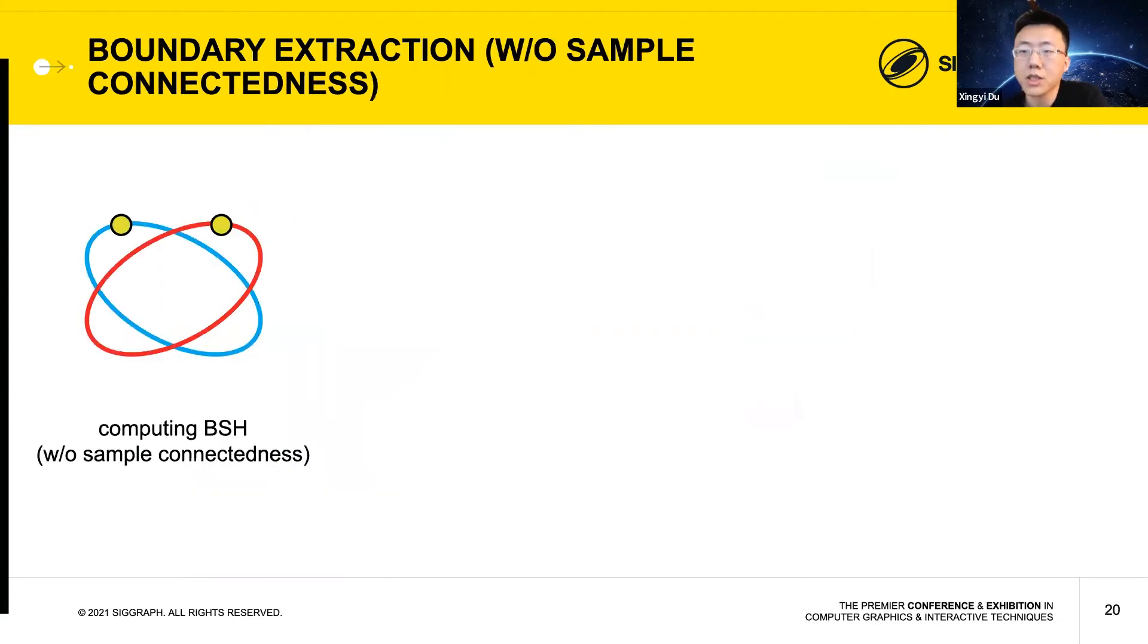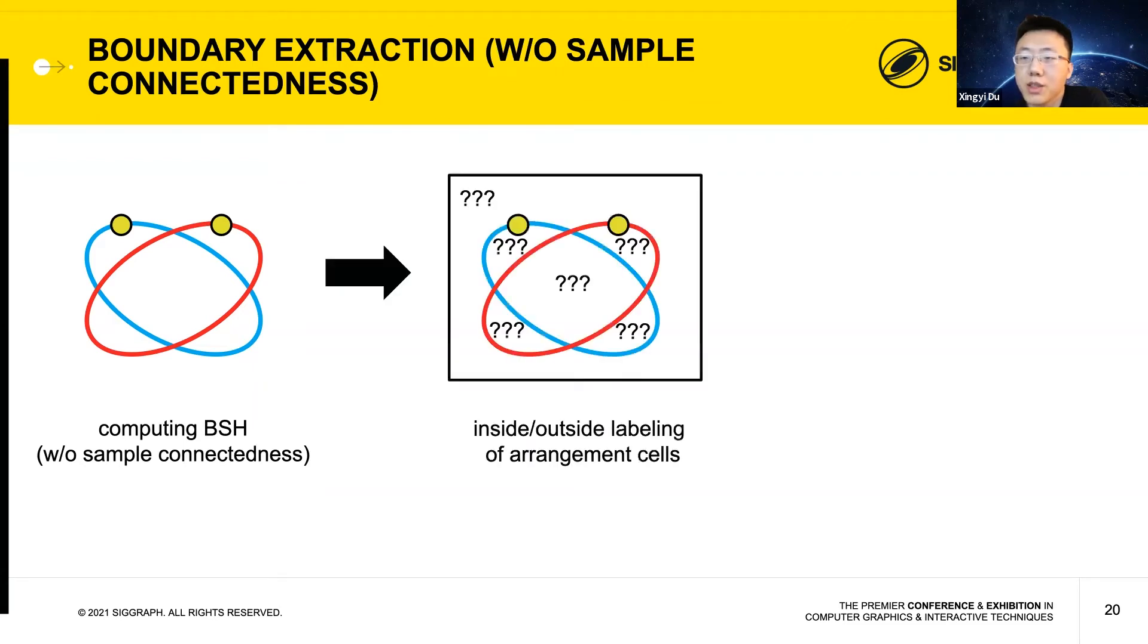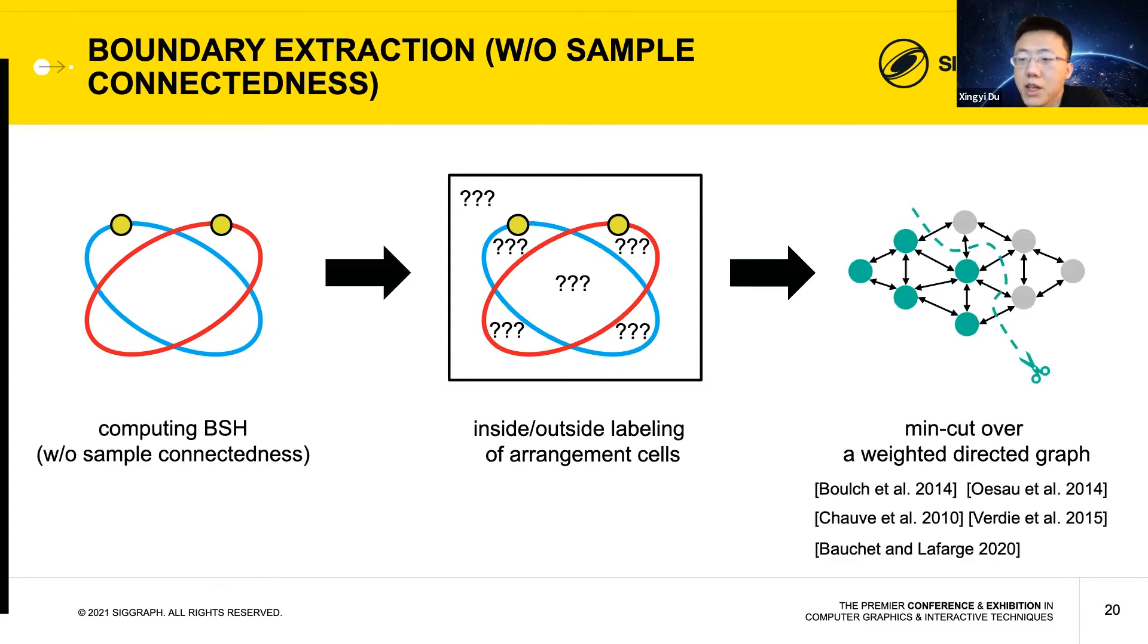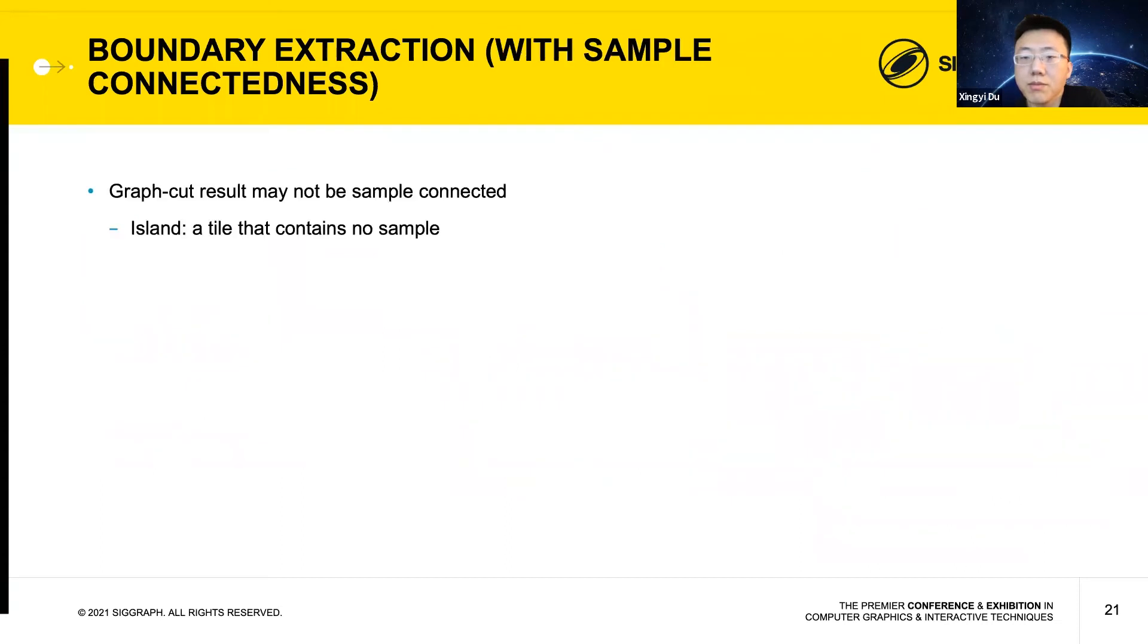Now we introduce the algorithm to extract the boundary of a BSH shape. We first consider the simpler task of ignoring the sample connected requirement. In this scenario, the problem can be equivalently formulated as an inside-outside labeling of the arrangement cells induced by the half-space boundaries. This labeling task, in turn, can be formulated as a graph cut problem on a weighted graph. Please see the paper for details. Similar graph cut formulations have been proposed for reconstructing piecewise linear shapes from point clouds. The result of graph cut algorithm may contain tails that do not contain any samples, which we call islands.